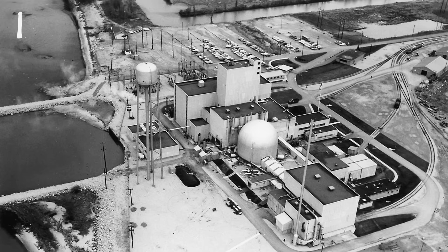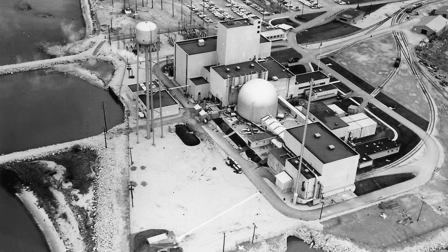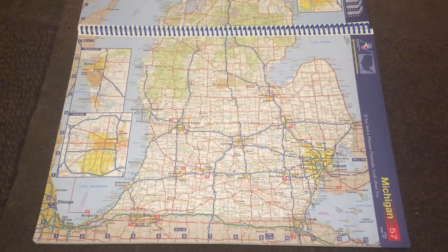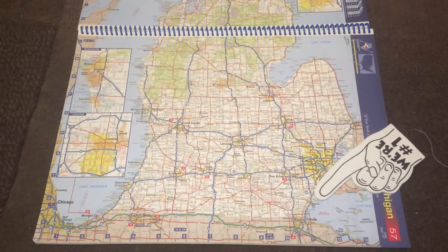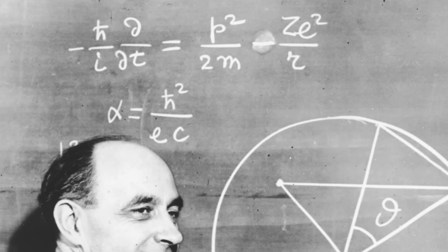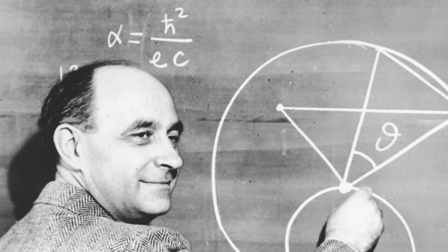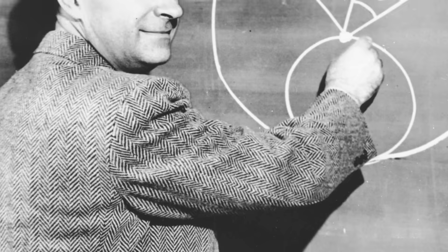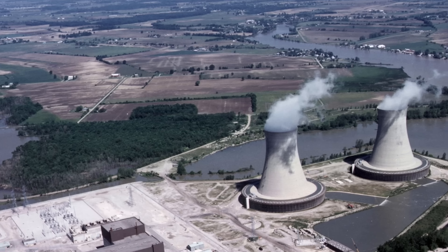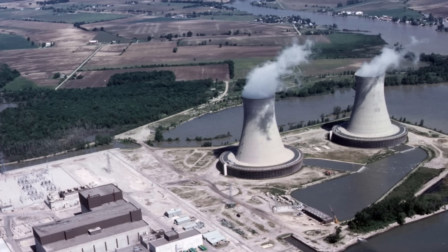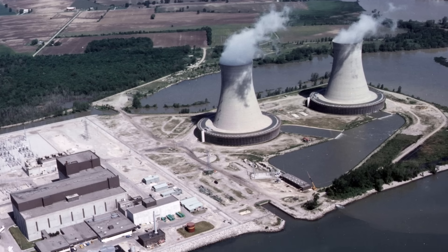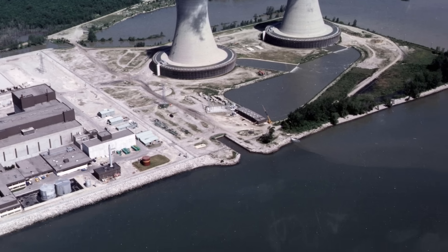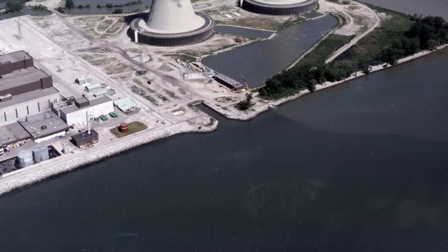The Enrico Fermi Nuclear Power Plant is a generating station in Newport, Berlin Charter Township, Monroe County, Michigan. The site is named after Nobel Laureate Enrico Fermi and began construction on an experimental reactor in 1956. The site would get a second reactor with construction beginning in 1972 and being commissioned in 1988. Fermi-2 was a boiling water type reactor, and a third identical reactor was planned but cancelled in 1974.